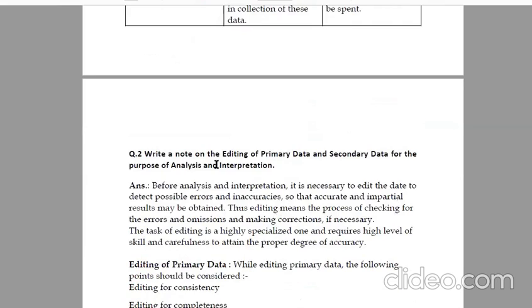Write a note on the editing of primary data and secondary data for the purpose of analysis and interpretation. Before analysis and interpretation, it is necessary to edit the data to detect possible errors and inaccuracies so that accurate and impartial results may be obtained. Editing means the process of checking for errors and omissions and making corrections. The task of editing is highly specialized and requires high level of skill and carefulness to attain proper degree of accuracy.